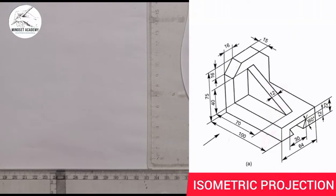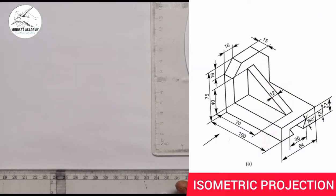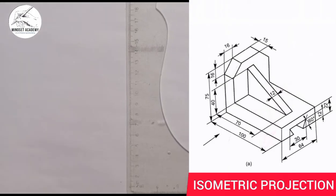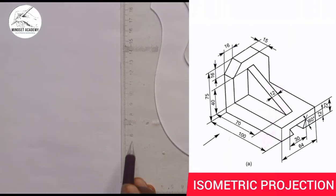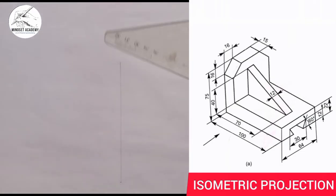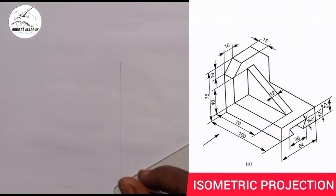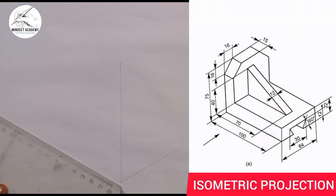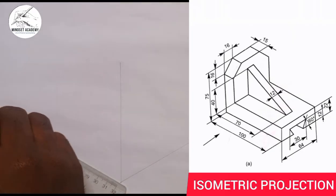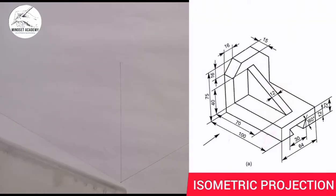Place your T-square and set square, and draw a vertical line — that is normal to the horizontal. You can see that, and you draw your Z-axis this way, and you draw your Y-axis this way. This is the X, Y, and Z axis.